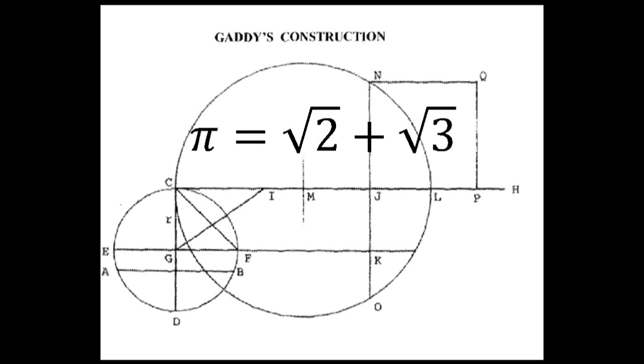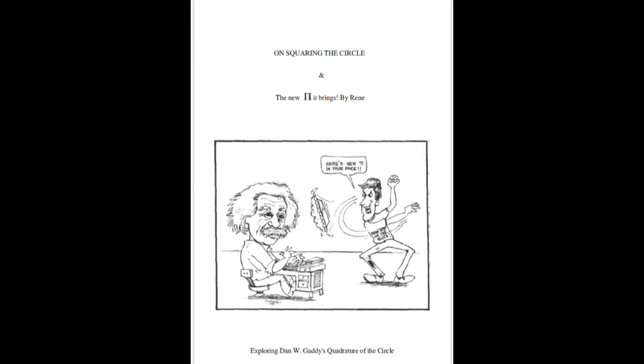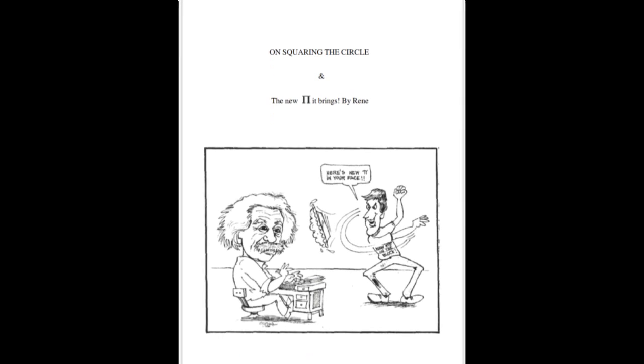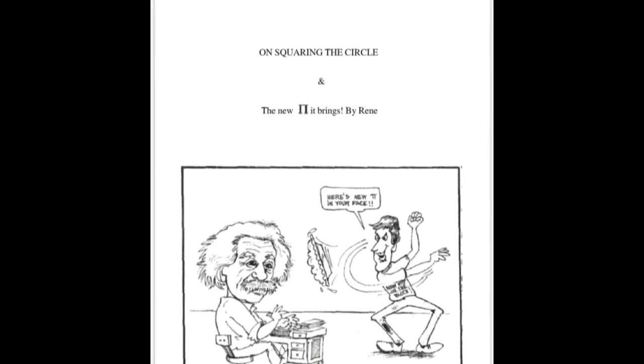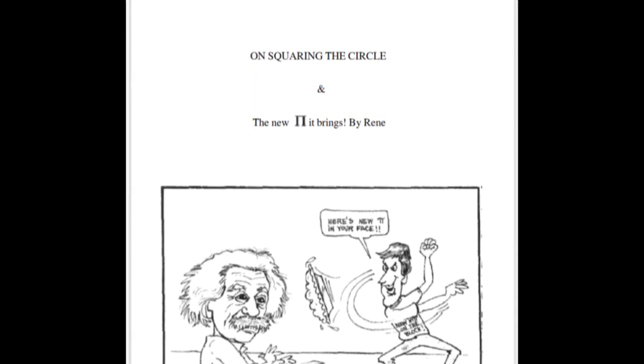Armed with this newfound knowledge, René wrote a 12-page pamphlet entitled Squaring the Circle, in which René offers his arithmetic proof that Gaddy's pi is the correct value. But did he actually succeed in proving anything?